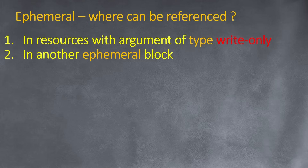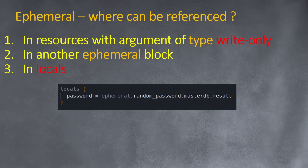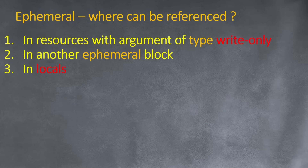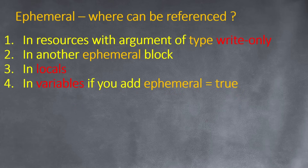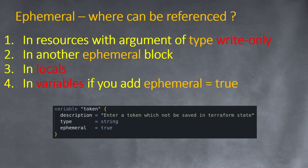Another place to reference ephemeral values is in another ephemeral block — one ephemeral block can reference results from another. You can also use ephemeral in locals: for example, read a password from ephemeral random_password and format it nicely so that local.password equals the ephemeral value. You can then use local.password, but only for ephemeral stuff.